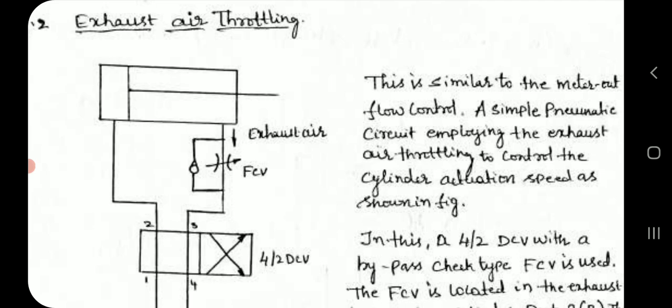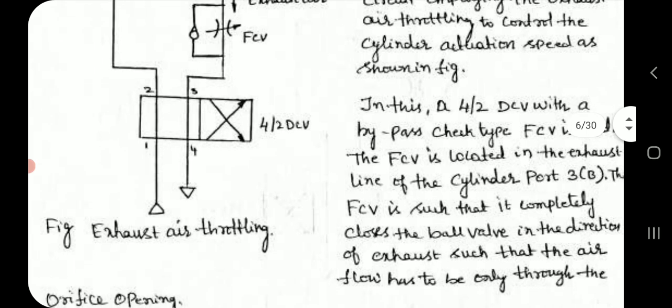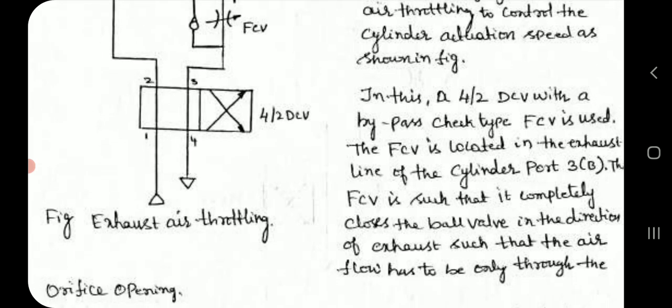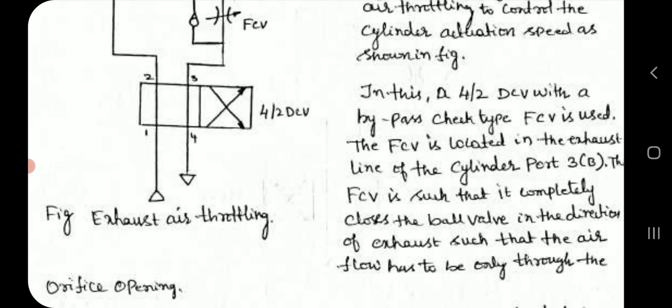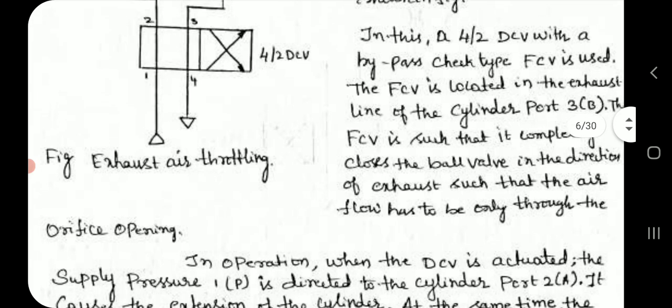Exhaust air throttling is similar to the meter-out flow control. A simple pneumatic circuit employing exhaust air throttling to control the cylinder actuation speed is shown in the figure. A direction control valve with a bypass check type flow control valve is used. The flow control valve is located in the exhaust line of the cylinder port B. The flow control valve completely closes the ball valve in the direction of exhaust such that the airflow has to be only through the orifice opening.